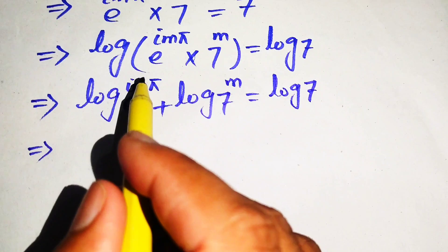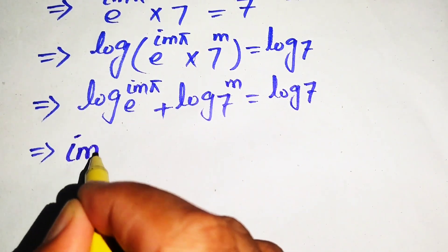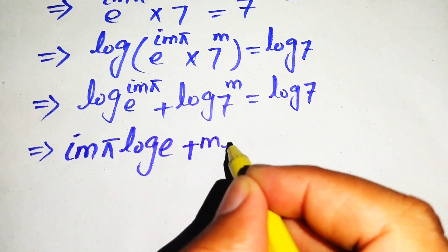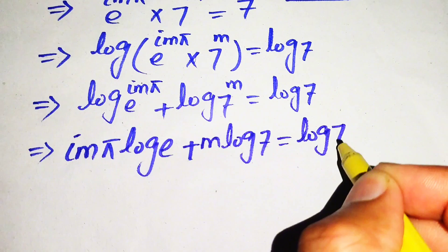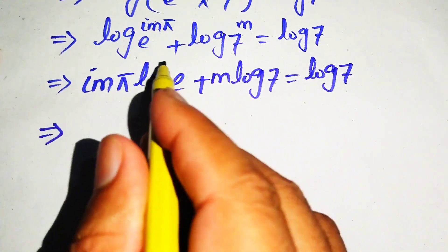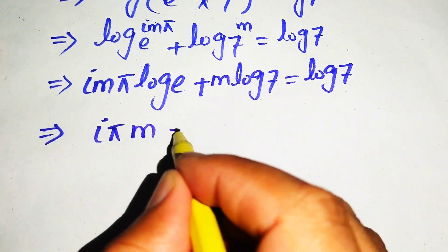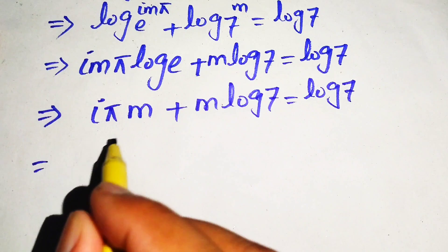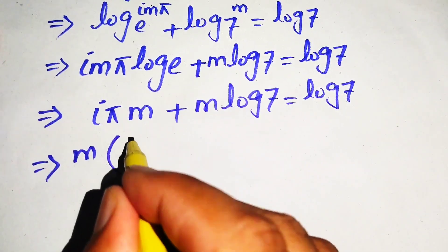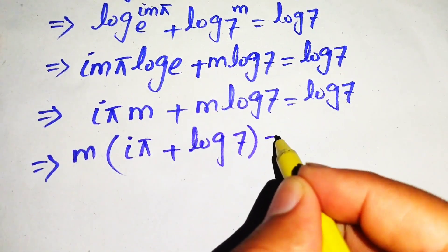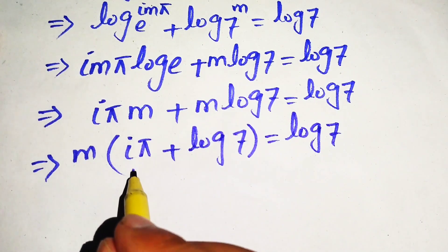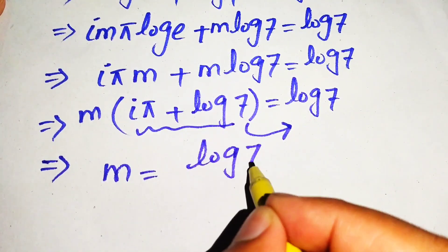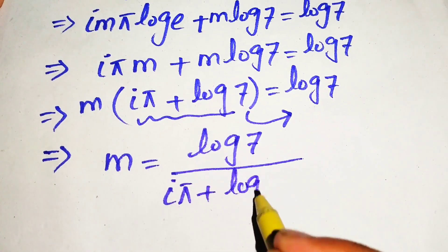Next, we apply the power rule of logarithms, moving the exponent to the front: iota m pi times log E plus m times log 7 equals log 7. Since log E equals 1, this simplifies to iota pi times m plus m times log 7 equals log 7. We factor out m as the common term, giving m times (iota pi plus log 7) equals log 7. Moving the bracket to the right hand side: m equals log 7 divided by (iota pi plus log 7). This is the final answer for method one.